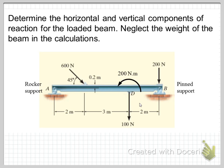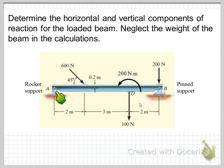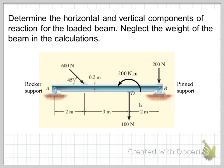So first let's consider the problem. We've got a beam here supported at end B by a pin support, and at end A by a rocker support, which is similar to a roller support in that it constrains vertical motion but allows some slight movement in the horizontal direction. We're told that we can neglect the weight of the beam, and we want to determine the horizontal and vertical components of the reactions for the loaded beam — the forces provided by these supports or constraints to the beam.